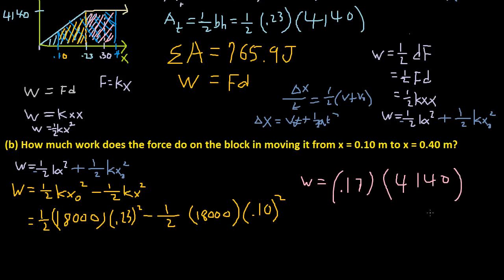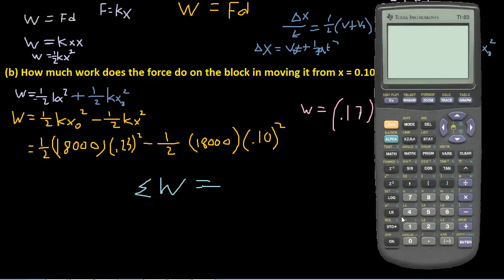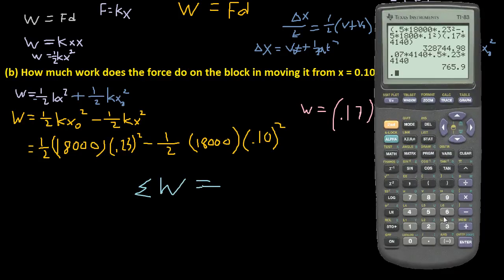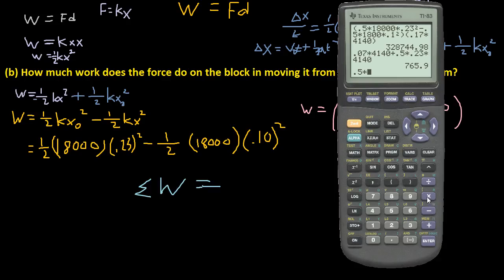And now we just basically add those two together for the network. So our network is going to be 0.5 times 18,000 times 0.23 squared, minus 0.5 times 18,000 times 0.1 squared, plus, because we're adding this to this, 0.17 times 4140.